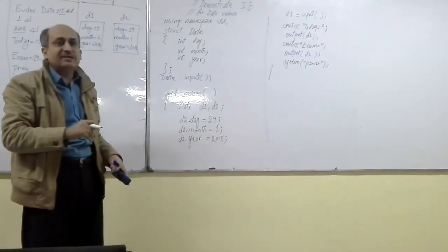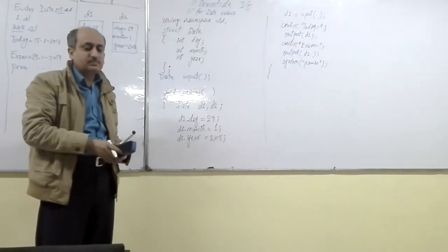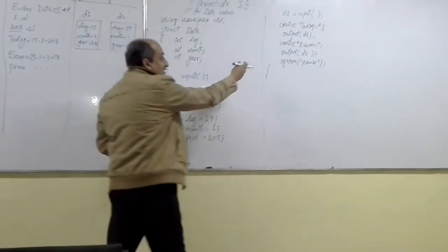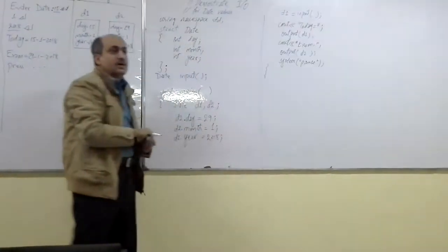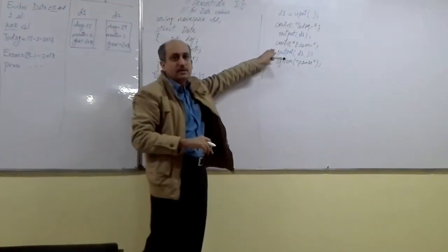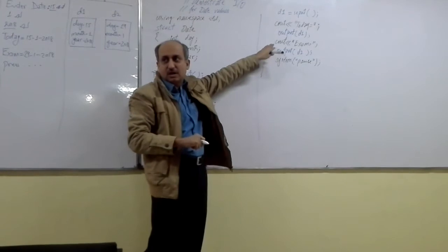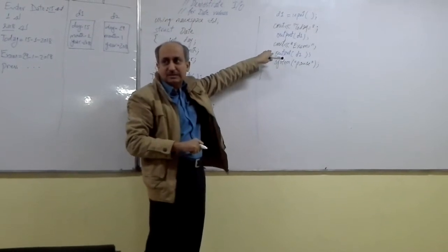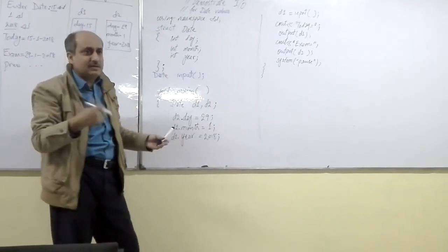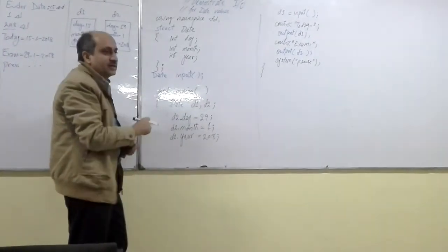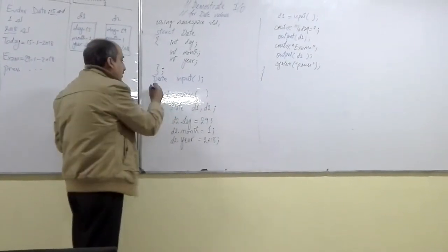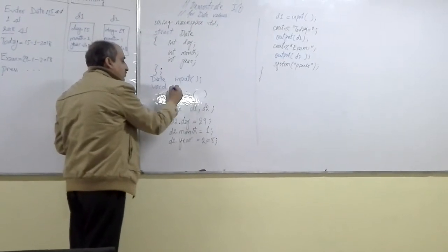Now we want to write a prototype of the output function. You can see in the function calls there is nothing on the left side of the output call — no assignment, nothing returned on the left side. So the return type can be void. We are not using any value returned by the output function, so we do not need to return anything. The return type of the output function is void.